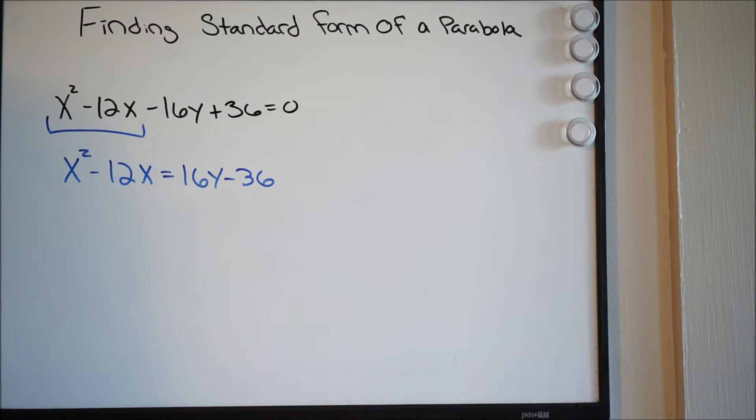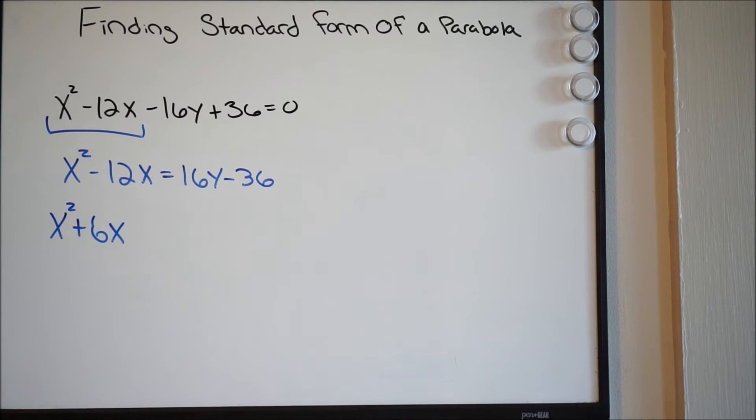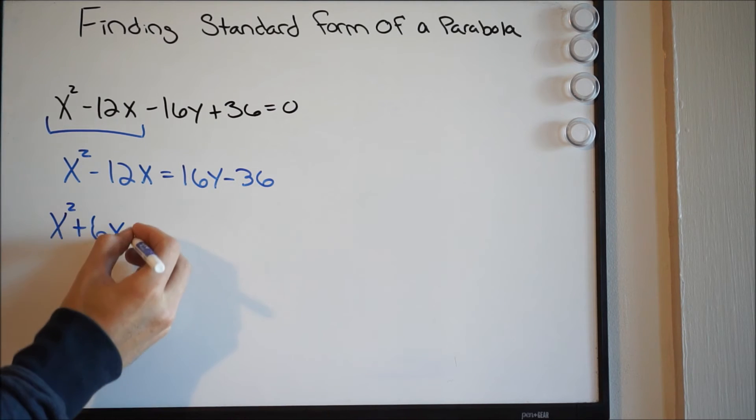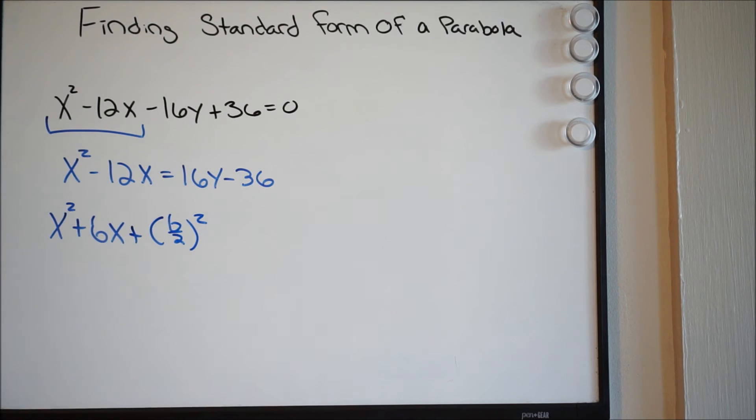And if you forgot the formula, we're completing the square, it's going to be x squared plus bx, and we're simply going to do plus b over 2 squared.